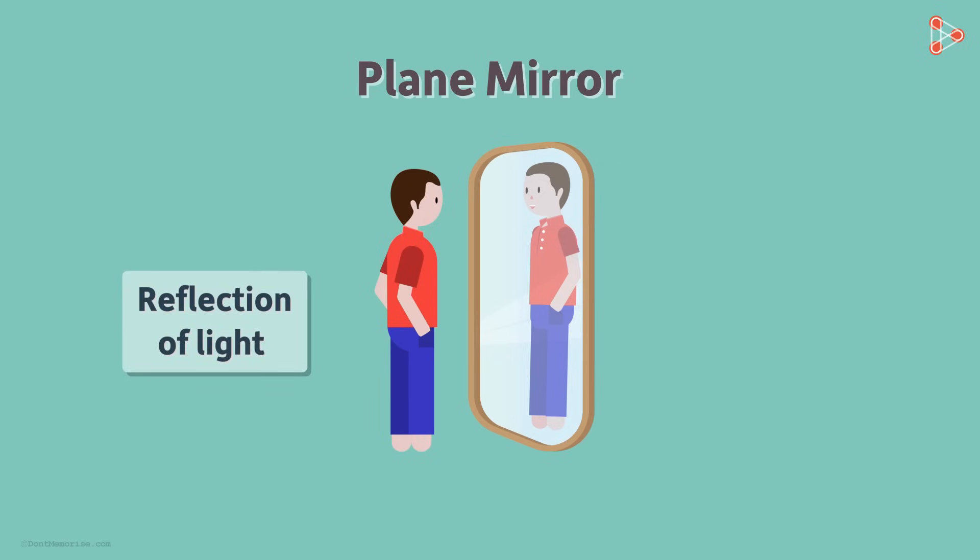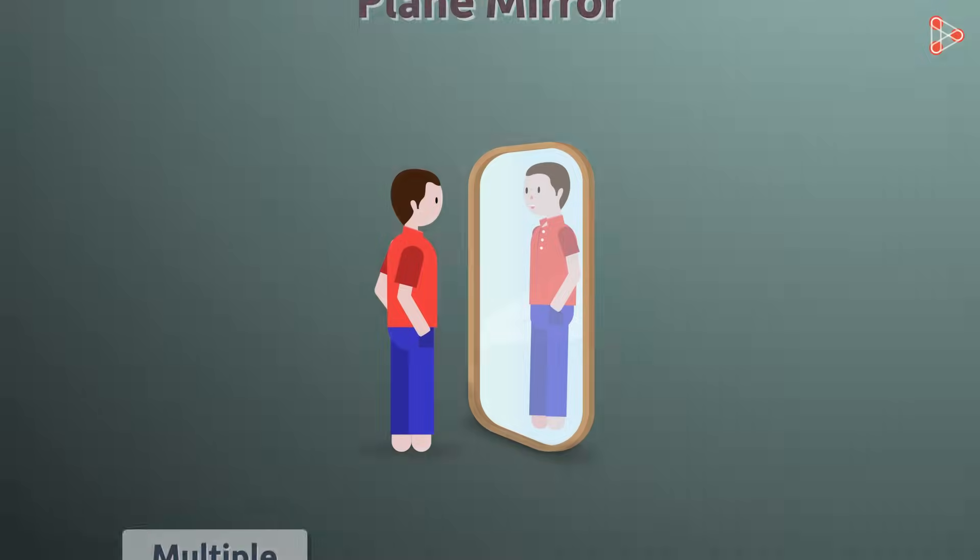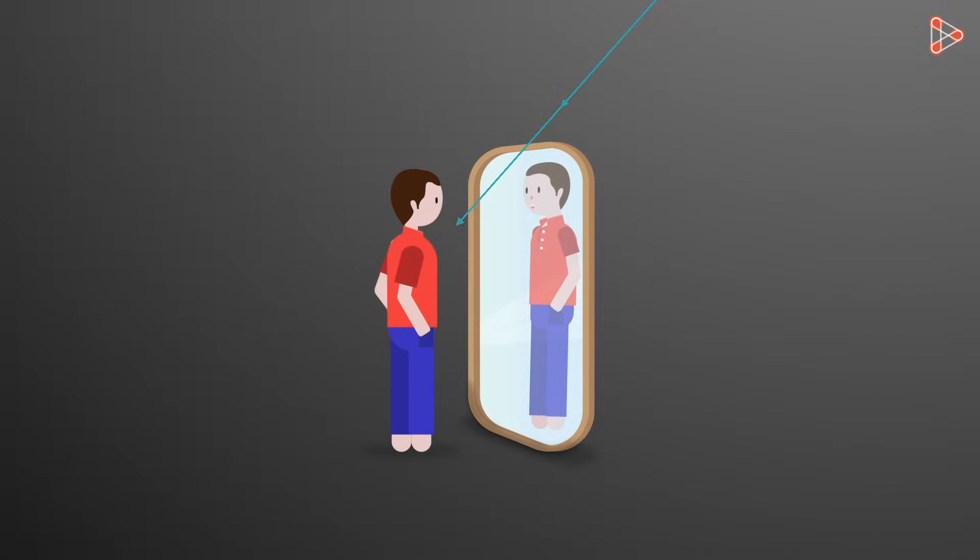In fact, it's due to multiple reflections of light rays. How? The light rays from the source are first incident on our body. They bounce off from our body and fall on the surface of the mirror and again gets reflected from there. This reflected light then reaches our eyes and we see our image.